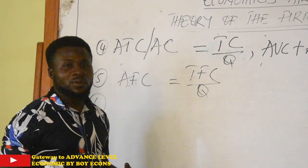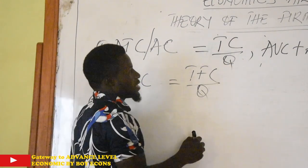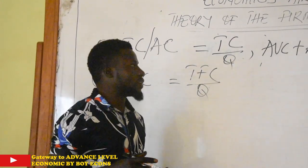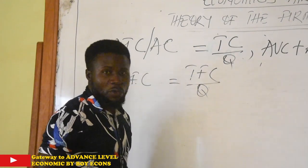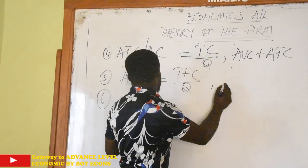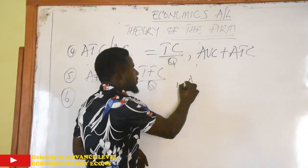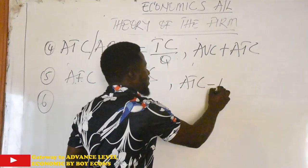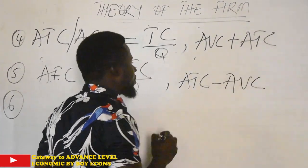But if you are given values in averages, let's say you are given average total cost and average variable cost, to look for average fixed cost it is simple. This is how you go about it: you say average fixed cost equals average total cost minus average variable cost.